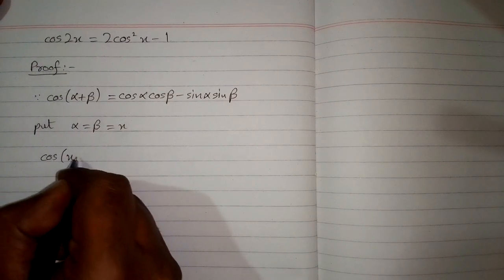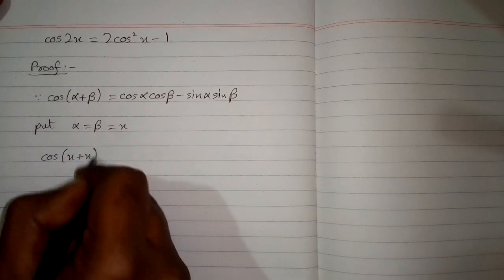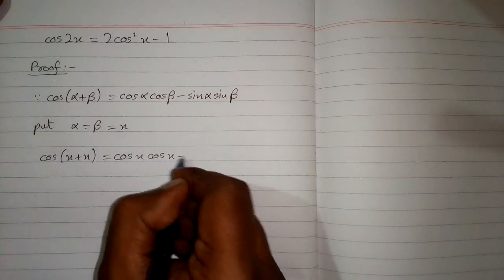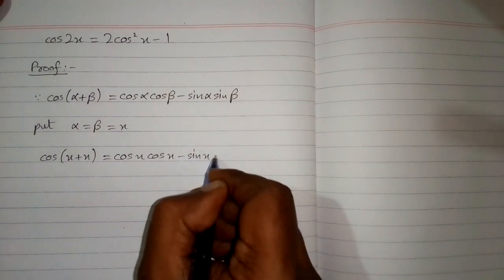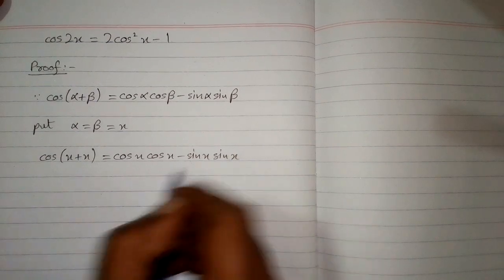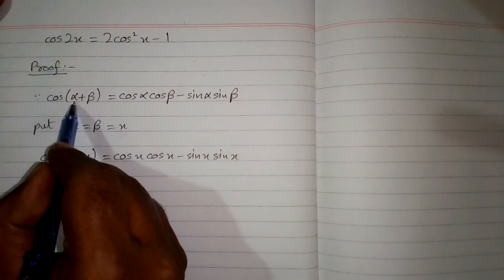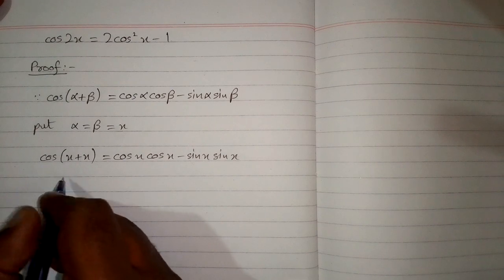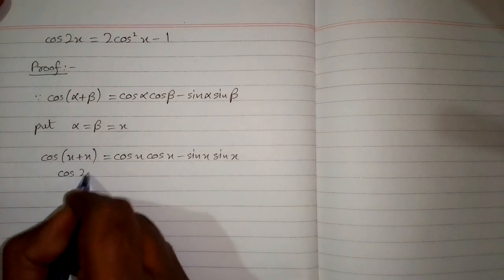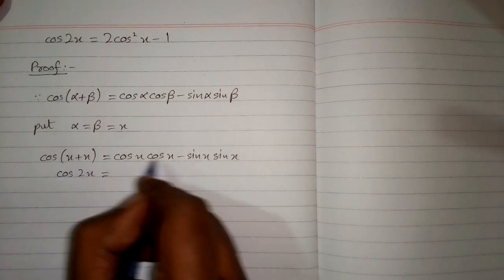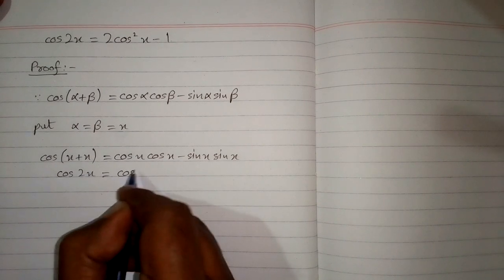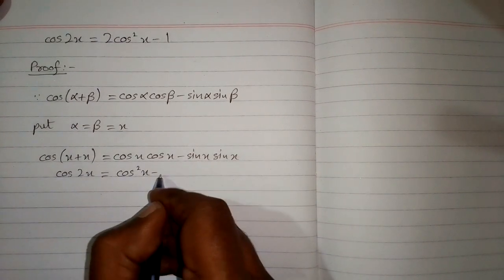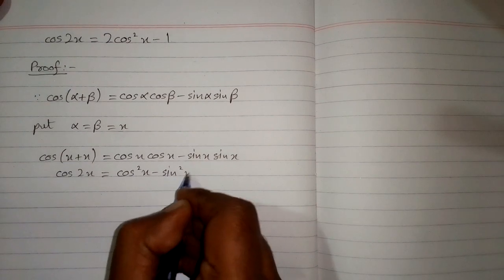So we have cos(x + x) is equal to cos x times cos x minus sin x times sin x. This gives us cos squared x minus sin squared x.